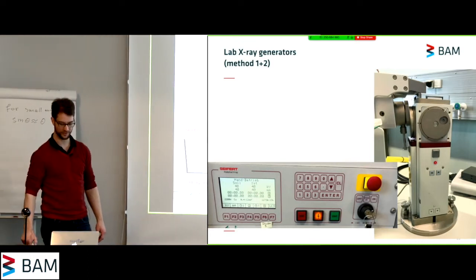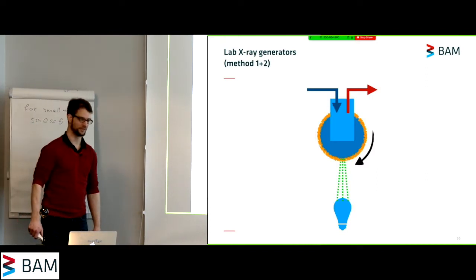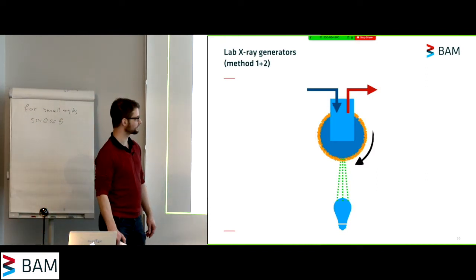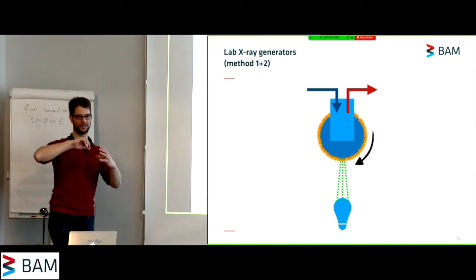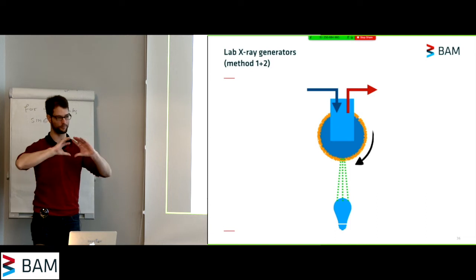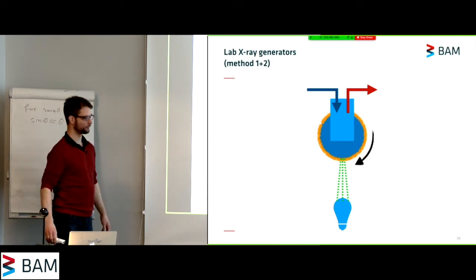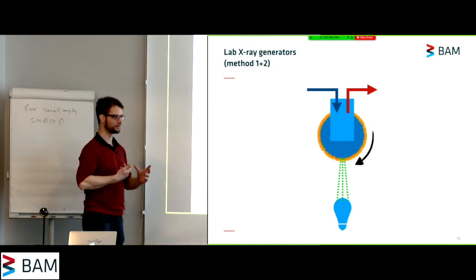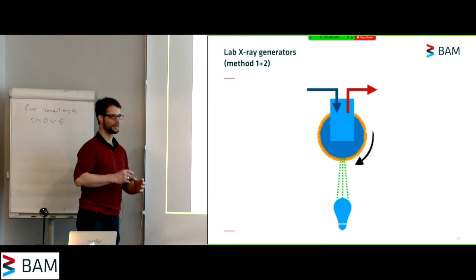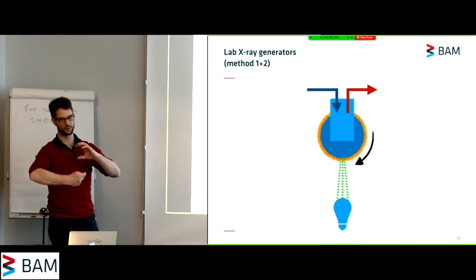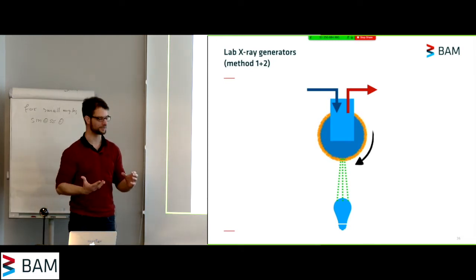So people came up with different ideas. One of which was the rotating anode X-ray generator. These are a bit more expensive. But what they do is they spread out the heat load over the surface of a drum. So they're spinning around a drum with a target coating on it, either copper or molybdenum or whatever energy you need. And by spinning around this drum, you distribute the heat over the entire surface of the drum. And you can then cool it more efficiently.